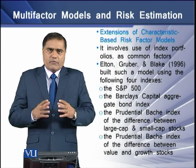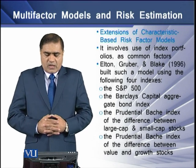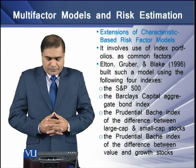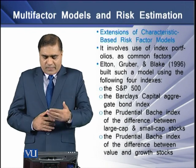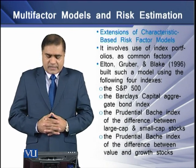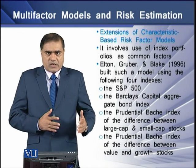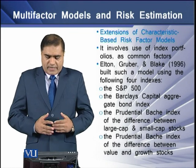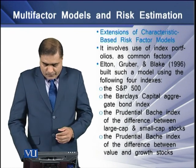The third category in multi-factor models is the extensions of characteristic-based risk factor models. This class involves the use of index portfolios as a common factor. Elton, Gruber, and Blake built a model using certain indices: the Standard & Poor's 500, the Barclays Capital Aggregate Bond Index, the Prudential Bache Index of the difference between large-capitalized and small-capitalized stocks, and the Prudential Bache Index of the difference between value and growth stocks — five factors used in their empirical model.